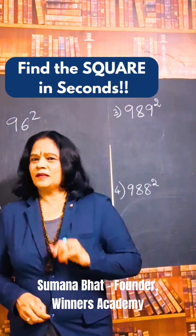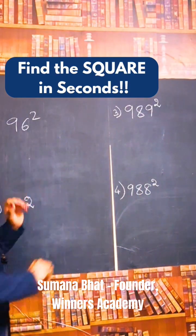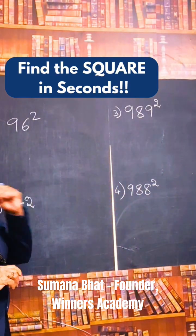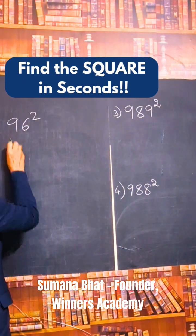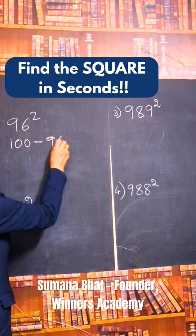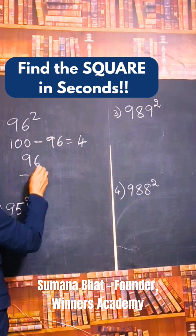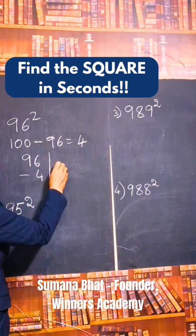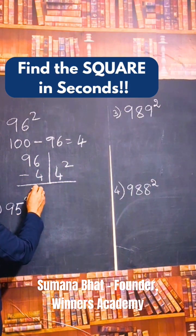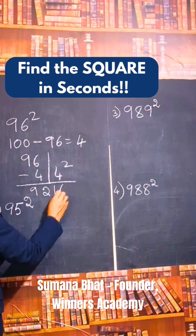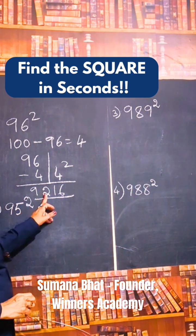Let us find the square of 96. First, find the difference. The base of the number is 100. 100 minus 96 — the difference is 4. Now subtract the difference and square the difference: 96 minus 4 is 92, and 4 squared equals 16. So the answer is 9216.